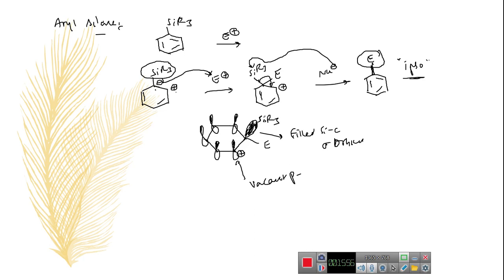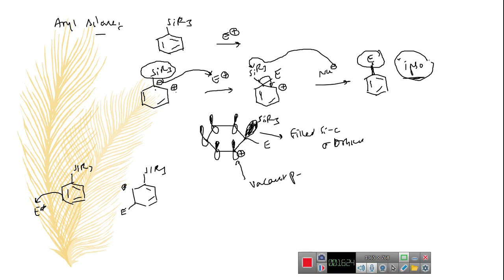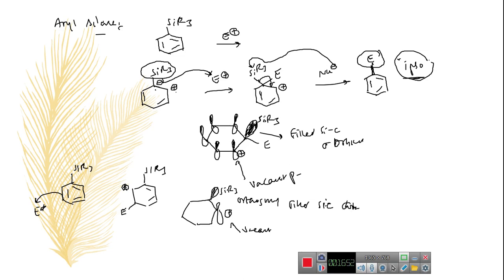Wherever the silane is present, it is replaced exactly at the electrophilic ipso position. There is another possibility where the electrophile could attack from another position on the ring, but the problem is that the overlap between the vacant p-orbital and the Si-C sigma bond is orthogonal in that geometry — overlap is not possible. That is why organosilanes undergo this mechanism and give electrophilic substitution specifically at the ipso position.